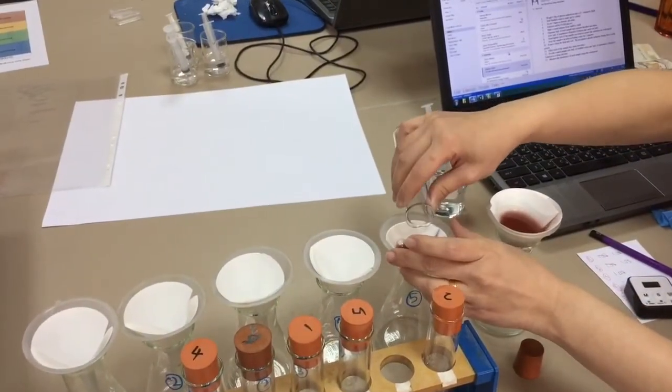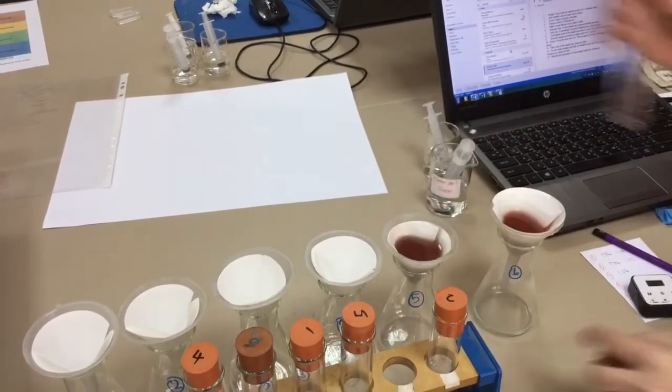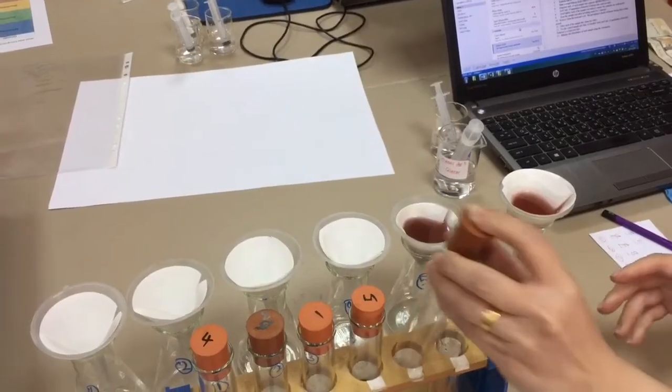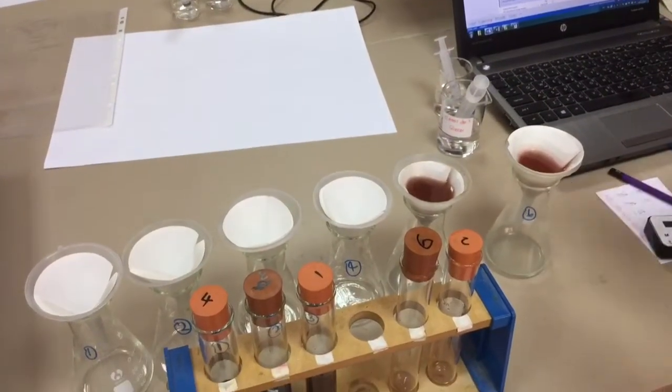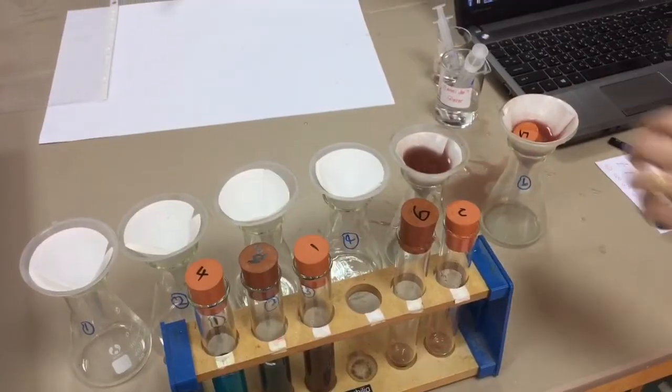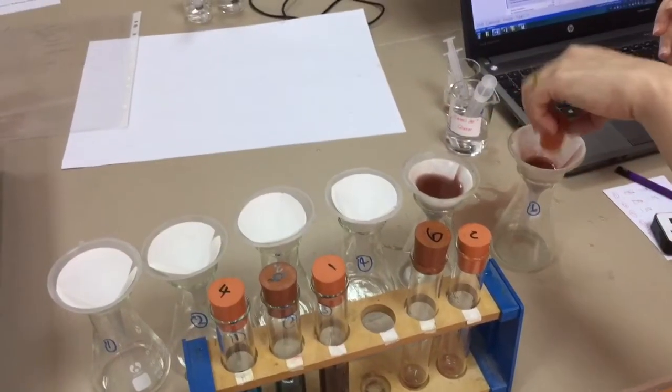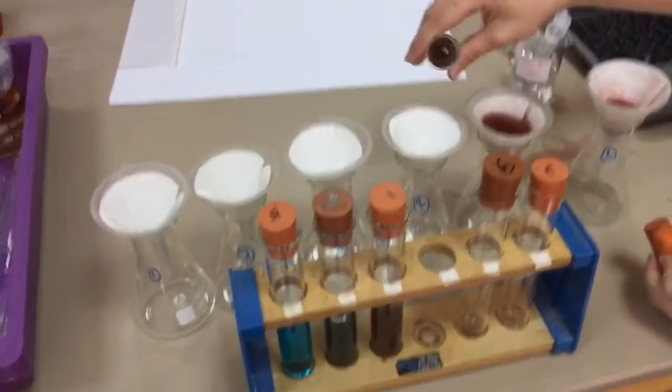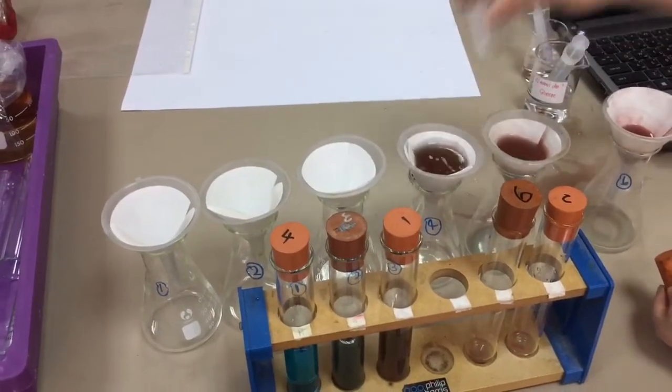While the bung might retain some of that precipitate, it doesn't matter because it's a systematic error. It would be pretty much the same for each tube because we're following a consistent method each time we shake it up. Be careful not to drop your bung because that's messed that one up a little bit but let's just see what we get with it.